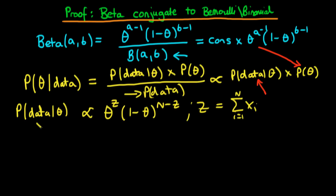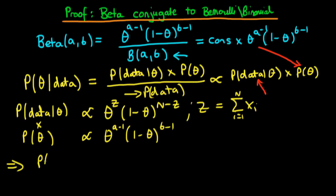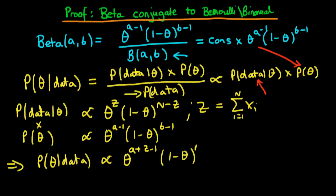Then if we multiply this by our prior — the probability of theta, which is proportional to theta to the power a minus one times one minus theta to the power b minus one — we multiply these two things together, and we get that the posterior distribution, the probability of theta given the data, is proportional to theta to the power a plus z minus one times one minus theta to the power n plus b minus z minus one.